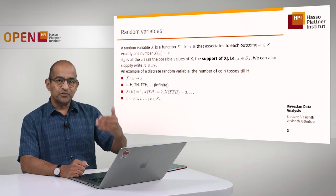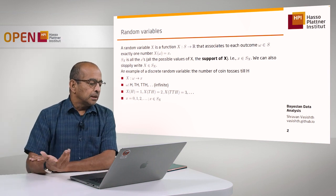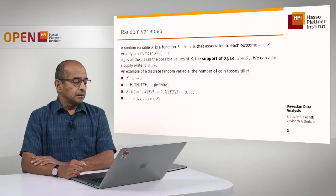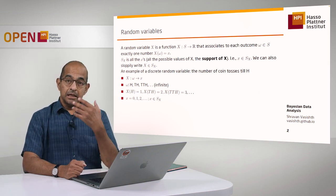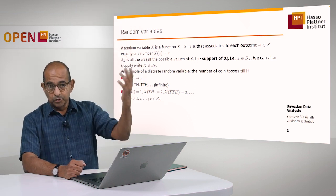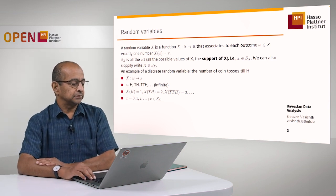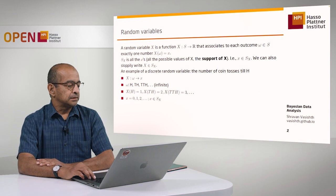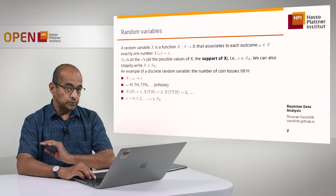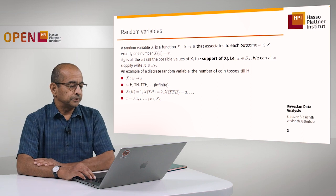What the random variable does is map each of these possible events to a real number — specifically, the number of times you have to toss the coin to get a heads. So the support of X will contain discrete values like 1, 2, 3, all the way up to infinity. This S of X, the support of X, will play a very important role in all the modeling we're going to do later.